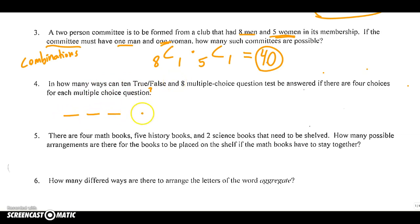Think of ten blanks. Ten blanks on a test. Each question is true/false, which means there's two possible answers for each one. Either true or false. So I'm going to put a two in each of these blanks because I can fill each of these questions with one of two answers. Same thing with the eight multiple choice part. Let's add eight multiple choice questions. Each multiple choice has four possible answers.